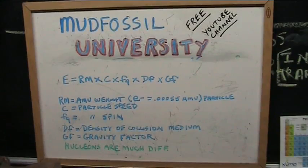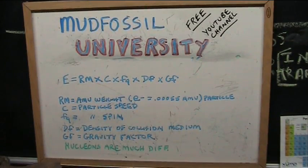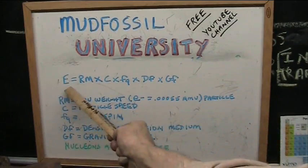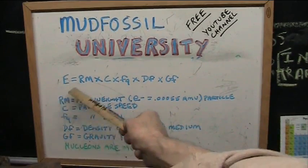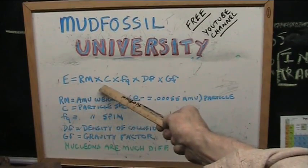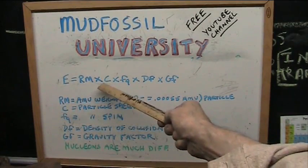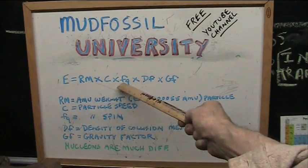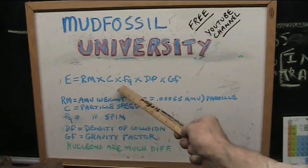By the way, I have the math on it. It's extremely simple. Energy equals the rest mass (Rm) times speed of the particle, which is not set, times the frequency that is spinning, the angular momentum.